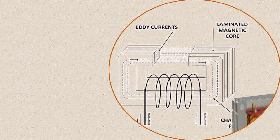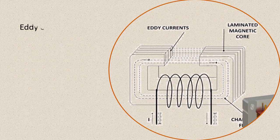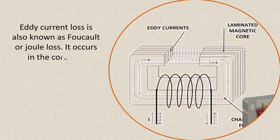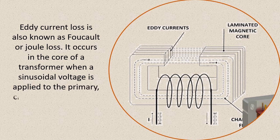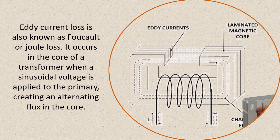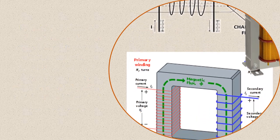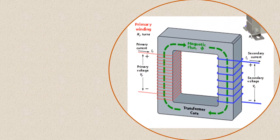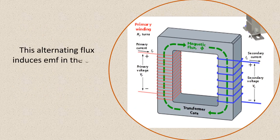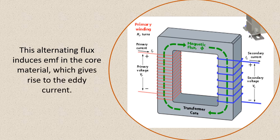Eddy current loss is also known as Foucault or Joule loss. It occurs in the core of a transformer when a sinusoidal voltage is applied to the primary, creating an alternating flux in the core. This alternating flux induces EMF in the core material, which gives rise to the eddy current.